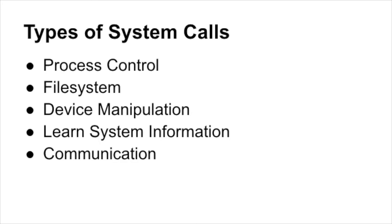Stepping back a little, there are probably five or six types of system calls if we want to classify them at a high level — you wouldn't find them classified this way in the Linux kernel code, but it's a useful way to think about the bulk of them. You've got a set of system calls around process controls: I want to make a new process, stop this process, see what other processes I have access to, send messages to other processes. That's a process control set of calls that the operating system will intermediate.